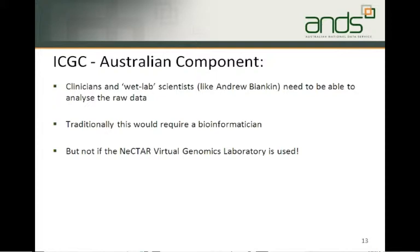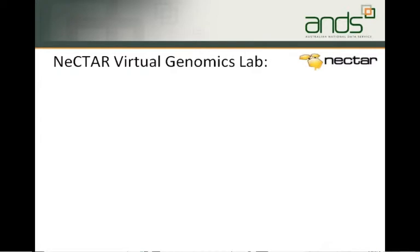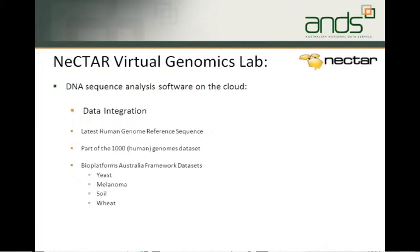This is not really going to be the case anymore if a virtual laboratory is used. One of the other e-research infrastructure developers in Australia, which is Nectar, is developing a virtual genomics lab. This ANS project with the DNA sequence of the tumours is very closely aligned with the Nectar virtual genomics laboratory project. The Nectar VGL is basically a system that will allow DNA sequence analysis software to be stored and run on the research cloud in Australia. One aspect is data integration — so the data is accessible for analysis — including the latest human genome reference sequence.